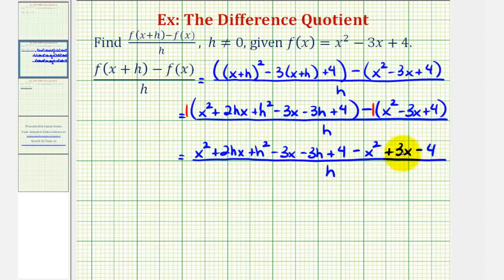Now looking at the numerator, notice how we have x squared minus x squared, that's zero. We also have negative three x plus three x, that's zero, and then we also have four minus four, that's zero. So we're left with two hx plus h squared minus three h divided by h, but we're not done yet. This does simplify further.